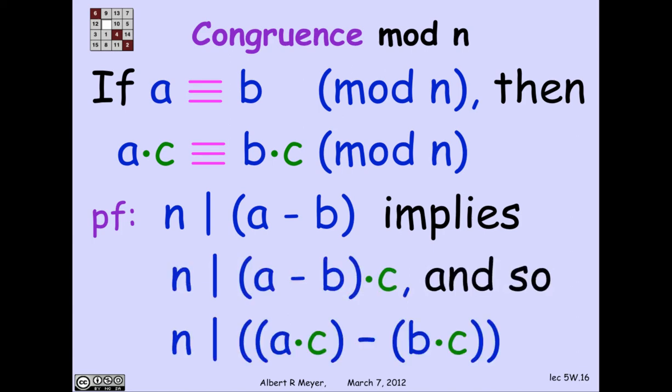We're given that n divides a minus b. That certainly implies that n divides any multiple of a minus b. So multiply it by c and then apply distributivity. And you discover that n divides ac minus bc, which means ac is congruent to bc modulo n.